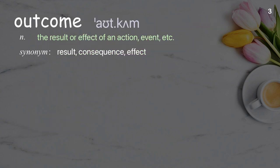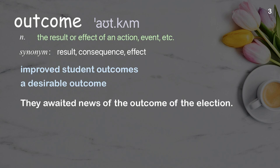Outcome. The result or effect of an action, event, etc. Examples: improved student outcomes, a desirable outcome. They awaited news of the outcome of the election.